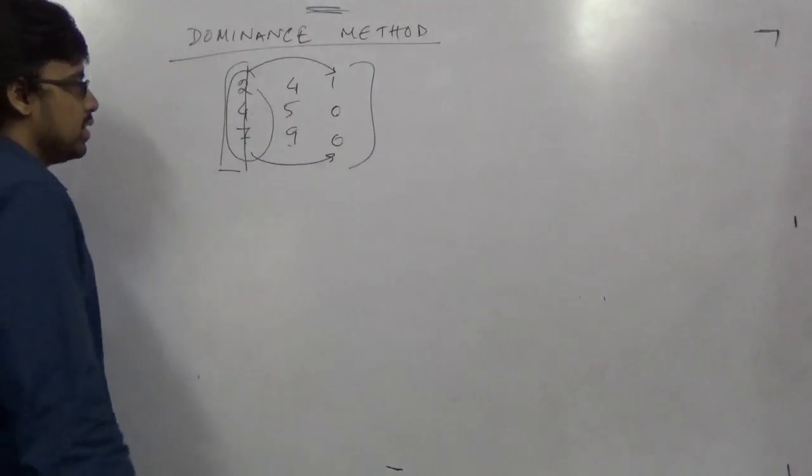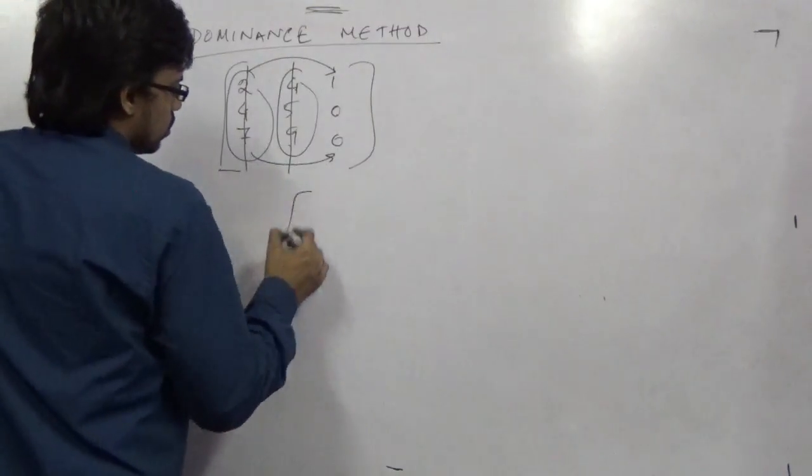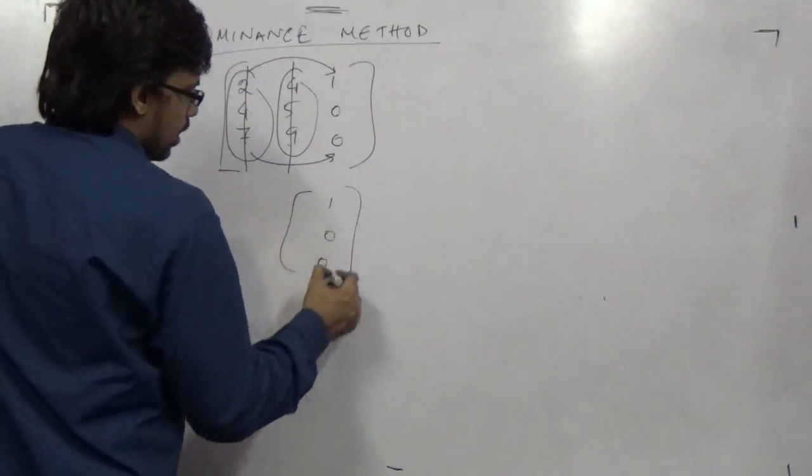Here also, these all values are greater, so this is also gone. So we are ending up with 1, 0, 0.